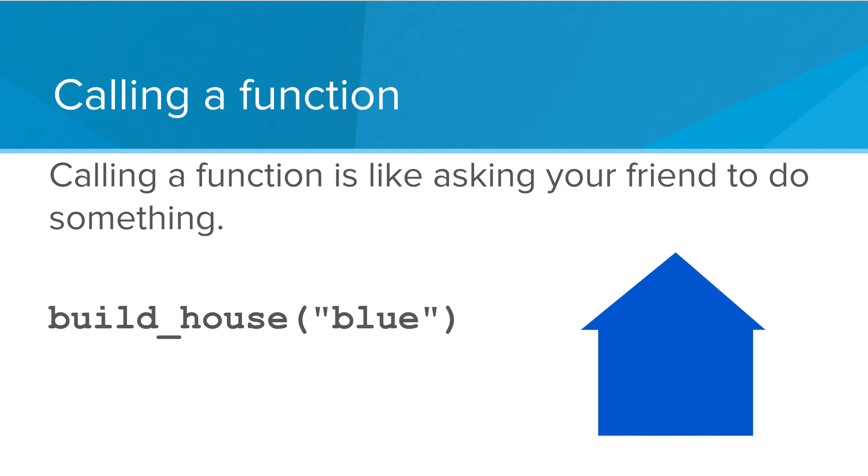So if I say build a house and pass it blue, I get a blue house. If I say build a house and pass it red, I get a red house.